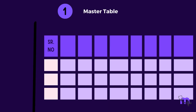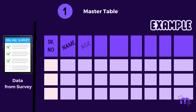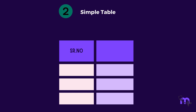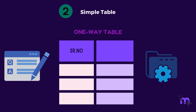A master table contains all the data obtained from a survey. For example, it includes all details like name, age, sex, education, decayed teeth, missing teeth, filled teeth, and DMFT score. A simple table, on the other hand, is a one-way table which supplies answers to questions about one characteristic of data only. For example, it might only show the DMFT score and not all the data gathered under different headings.